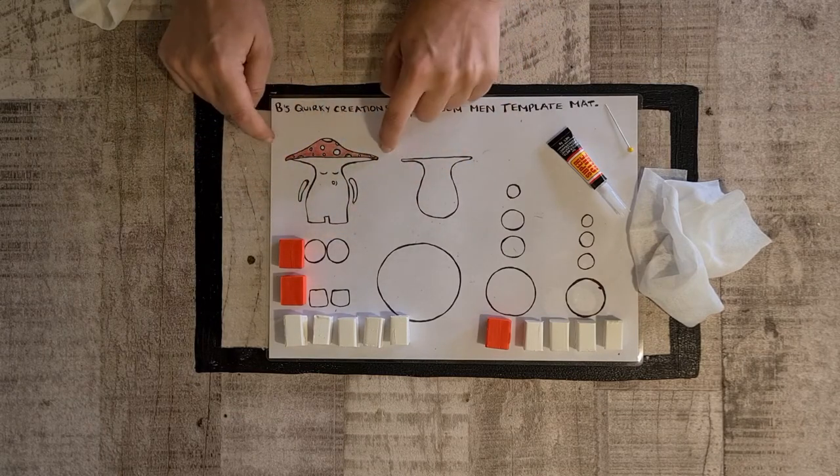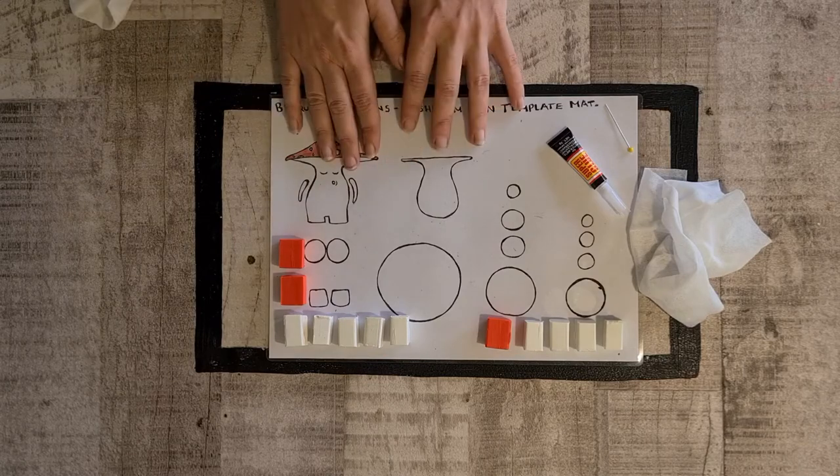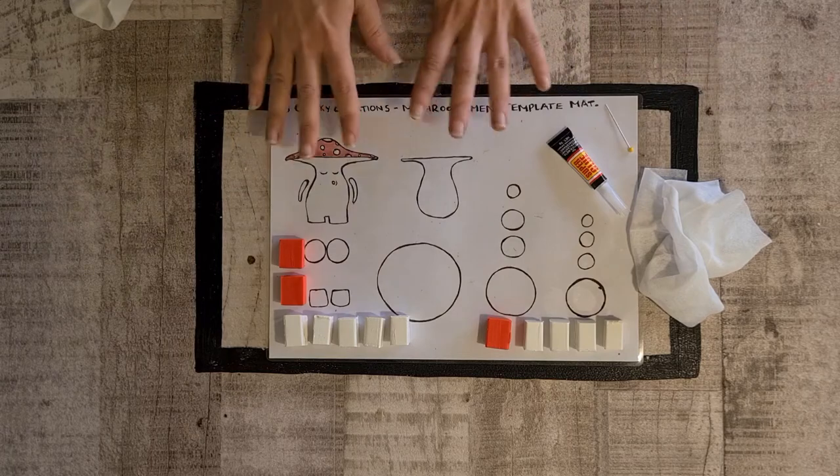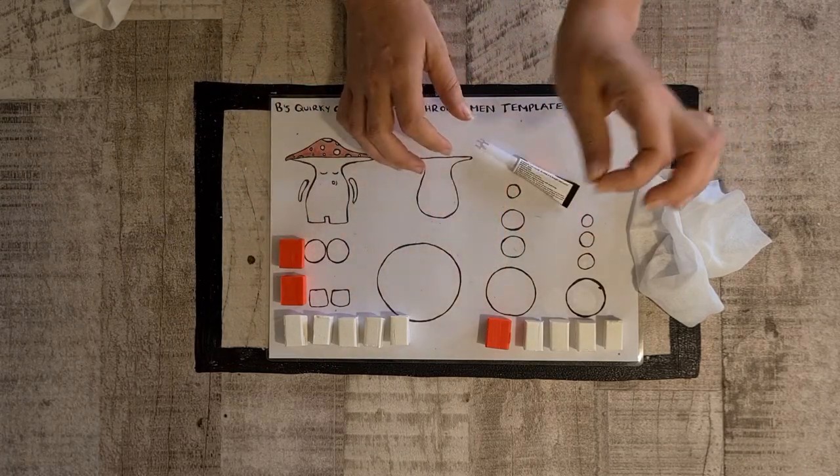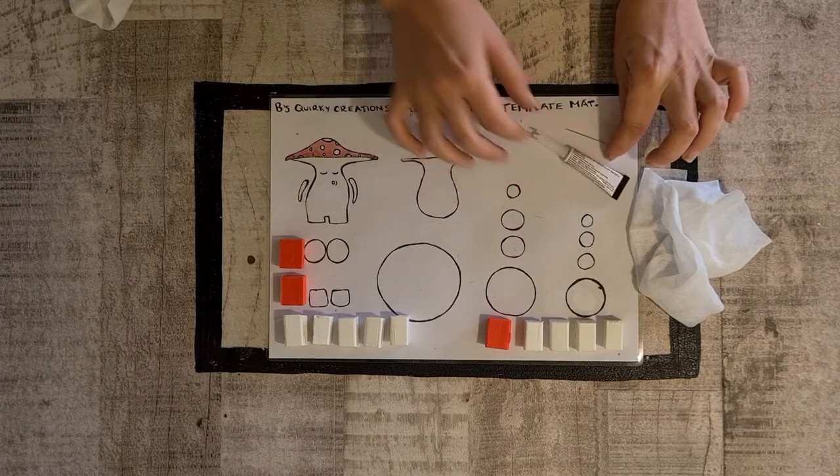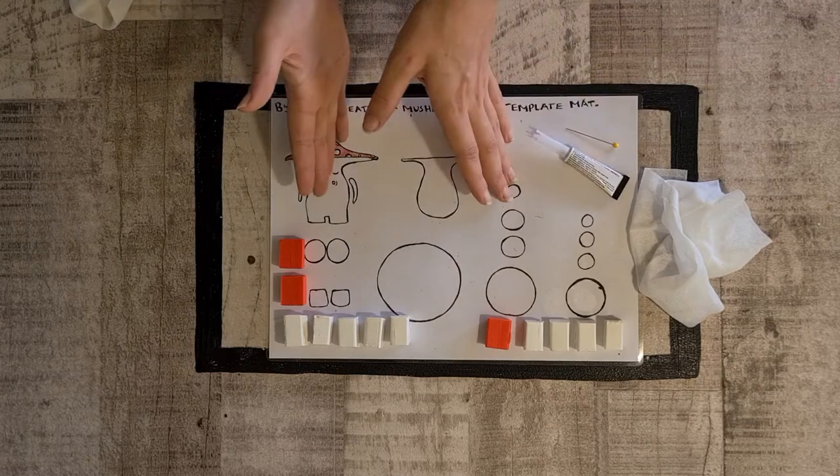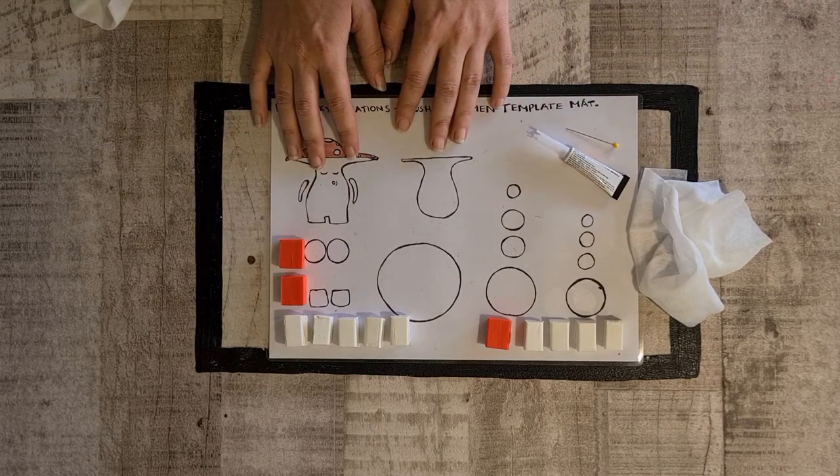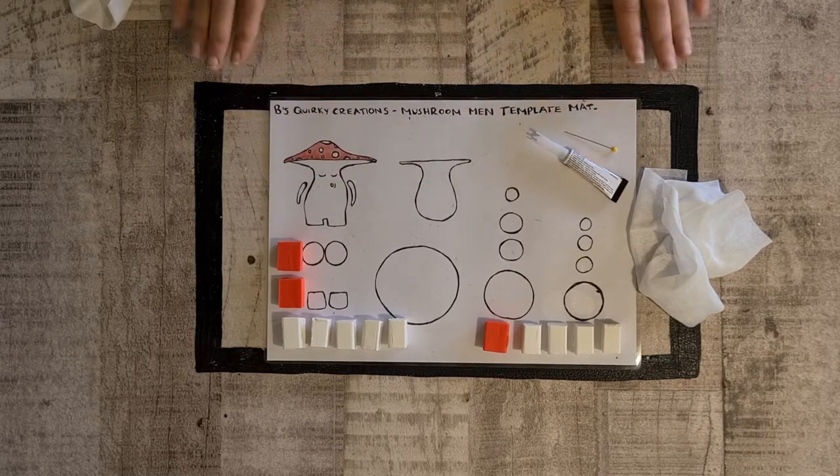But yeah so today we're gonna be making two cute little mushroom men. So we're starting out with a guy this size and then you'll also be making a little miniature version. So you can see here if you bought one of our kits you should have your template mat, your clay, some super glue and also a little needle for your detailing. But if not you can go out and buy all this stuff yourself and honestly you don't need the template mat, it is just very helpful. But you'll still be good to go. So let's get started.